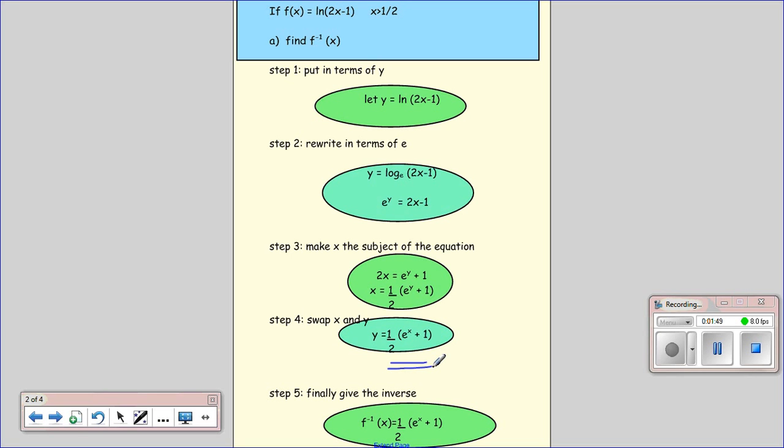So whenever you find the inverse, it's the same sort of thing. This has slightly got an extra step in here, because you have to change the log into something where we've got e as the base and the power.